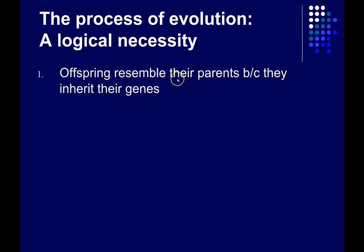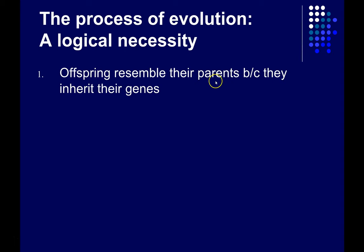First, everyone can recognize that offspring resemble their parents because they inherit their genes. Even if you knew nothing about genes, it would be clear that offspring resemble their parents. My daughter looks a little bit like me and a little bit like her mom. She looks very little like a brook trout, or any other fish for that matter, because she didn't get her genes from a brook trout — she got them from me and from her mother.